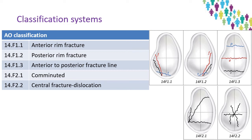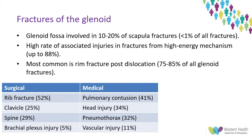For a quick summary: scapular fractures are rare and glenoid fossa involvement is a small subset of these. However, there is a high rate of associated injuries, particularly in those with a high energy mechanism. The most common glenoid fracture we will all see is the low energy anterior bony Bankart lesion, comprising 75 to 85 percent of all glenoid fractures.